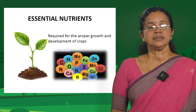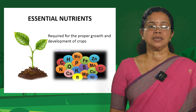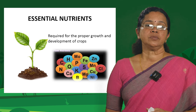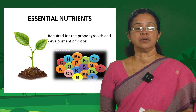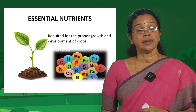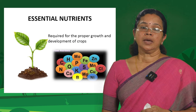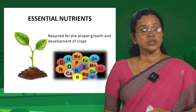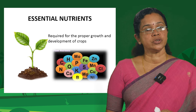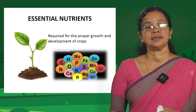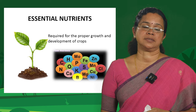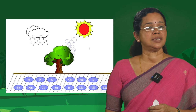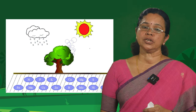Now let us see what these essential nutrients are. These are nutrients which are required for the proper growth, development and productivity of crops. As of date, 17 nutrients have been categorized as essential for plants. Among all the hundreds of nutrients that we have, 17 have been designated as essential nutrients.